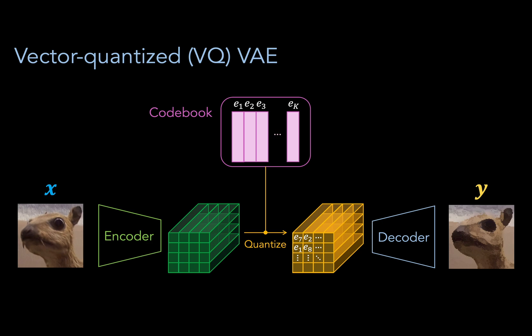So instead of having an infinite number of possible latent vectors, we now have to choose from a limited collection, which is known as our codebook. This clearly constrains our latent representation. So why would we do this? Well, in this video, we'll explore why we might want to quantize and how the VQVAE achieves this.